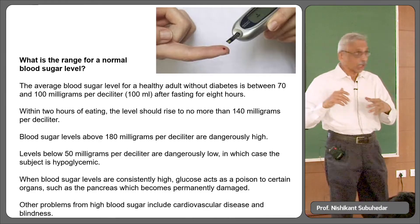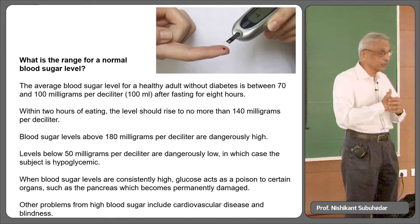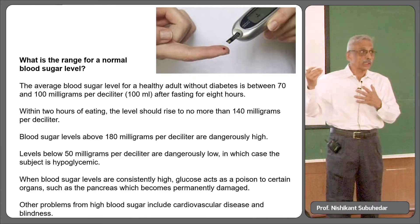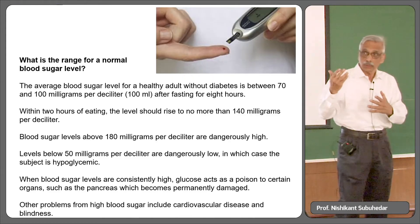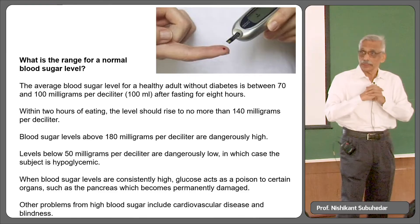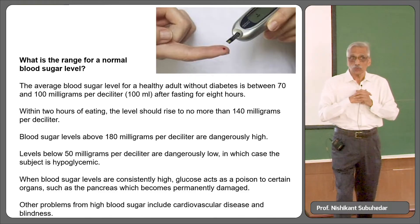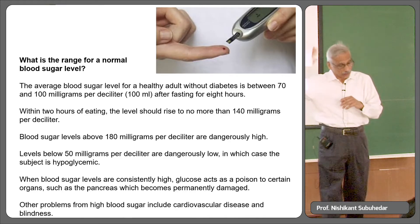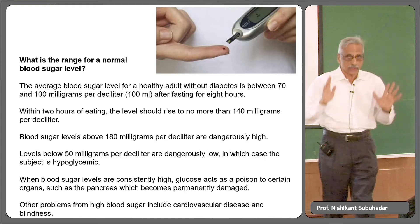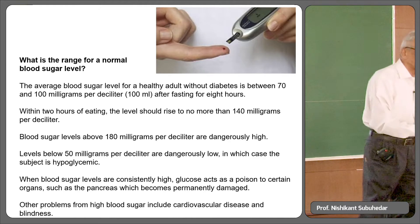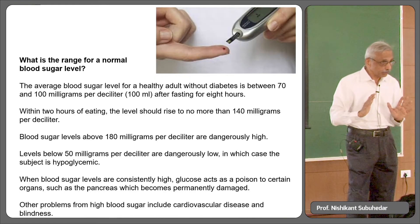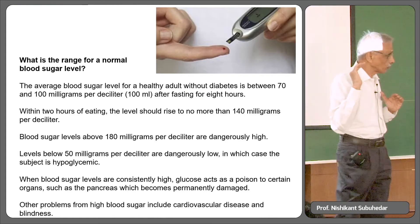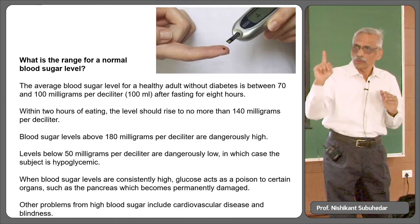You cannot allow blood glucose to fall below that limit. At the other end, if you've had a carbohydrate-rich meal, blood sugar may rise to 120–130 milligrams per 100 ml. Beyond that it's not a good idea, because higher glucose levels over time — as you all know from diabetes — can damage the heart, kidneys, and brain. So it's very necessary to maintain blood glucose within a narrow limit: about 80 on the lower side and 120 on the higher side.